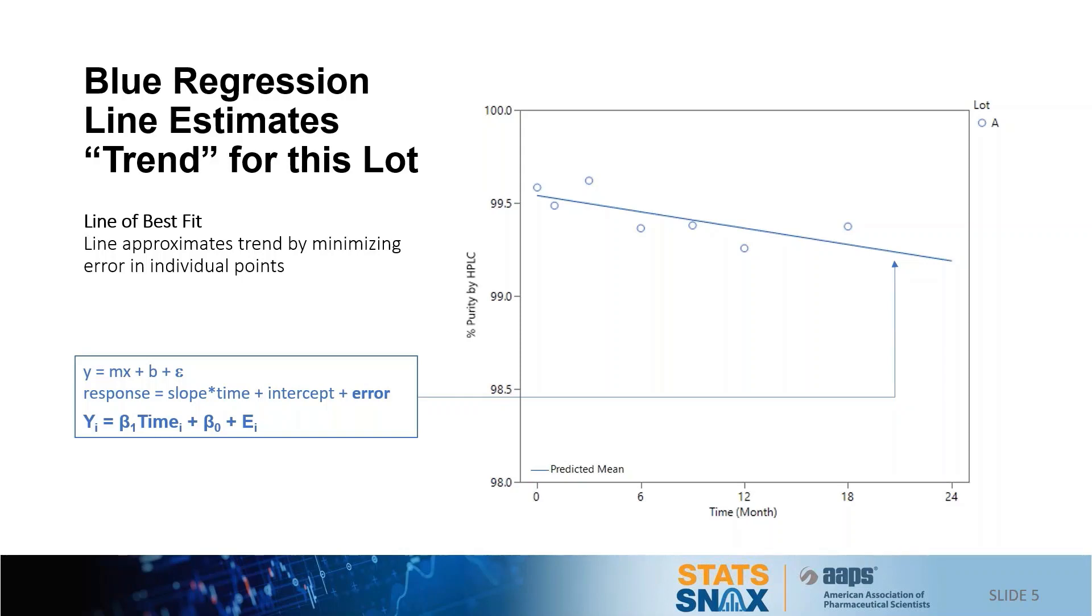So why an error term? Since the line of best fit minimizes the amount each individual point deviates from the line, there is uncertainty in the estimation of the line. So it is very important that we add the error term to the equation to represent this uncertainty.